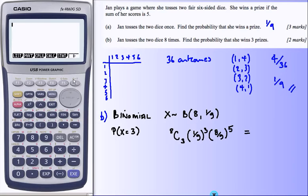So let's find our NCR button. There it is. So we've got eight combinations, choose three from eight. Multiply this by one-ninth to the power of three, and then multiply that by eight-ninths to the power of five. And there's our answer.